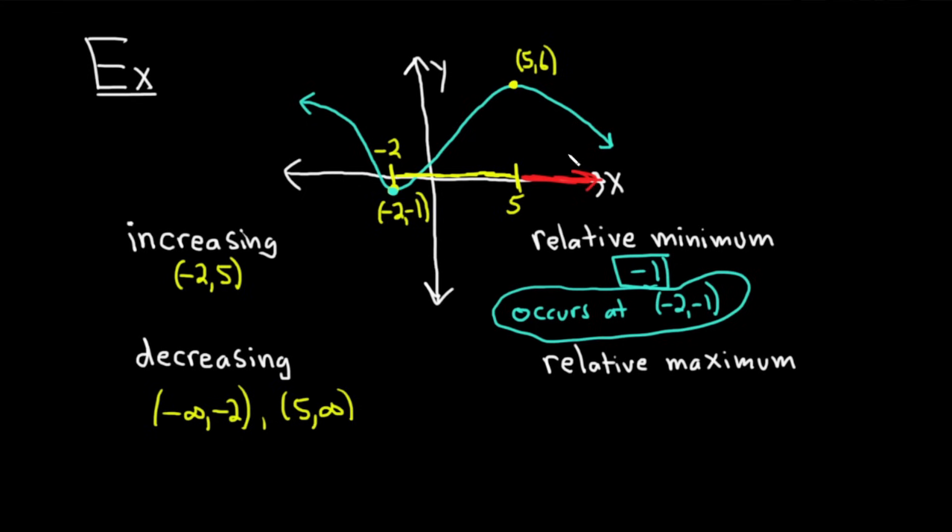The relative maximum is going to be 6. 6 is the biggest y value relative to the points around it. Relative to the other y values, 6 is the biggest one. It occurs at 5 comma 6. Or you would just say, it occurs at x equals 5. Again, different textbooks will ask different things. But the key point is, relative mins and maxes are always y values. They're function values. So whenever you have something like this, that's going to be a relative min. Something like this, it's going to be a relative max.